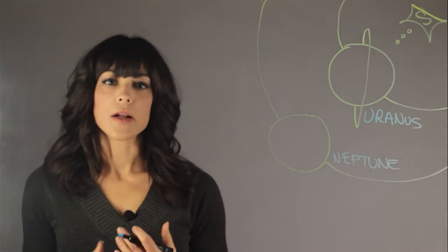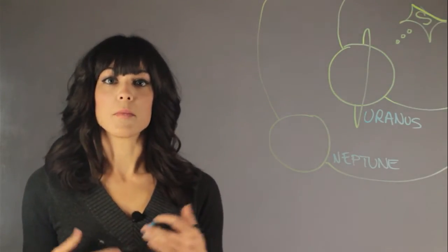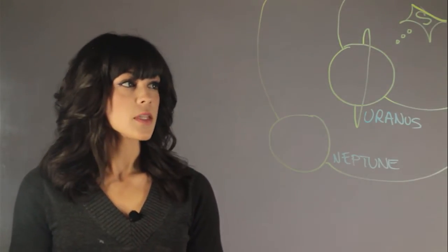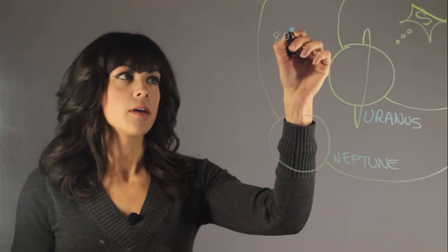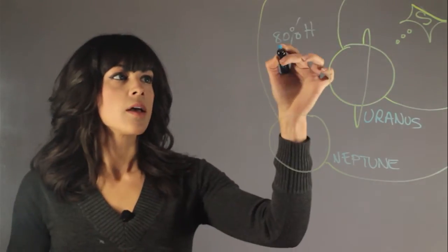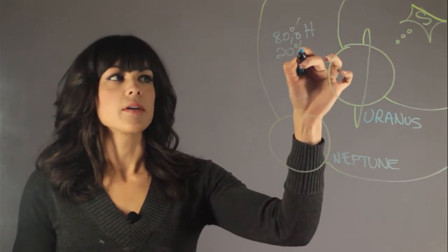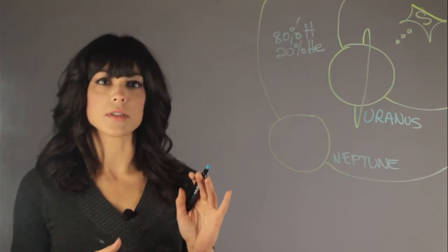Now what are Uranus and Neptune made out of that the other planets don't have that makes that color blue? So Uranus and Neptune both have about 80% hydrogen but so do all of the other ones. The other 20% or more is helium and then here comes the trick.